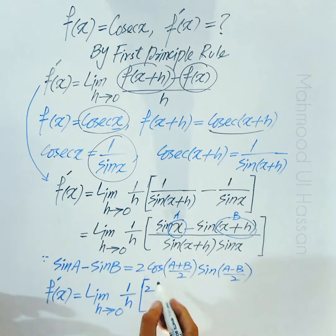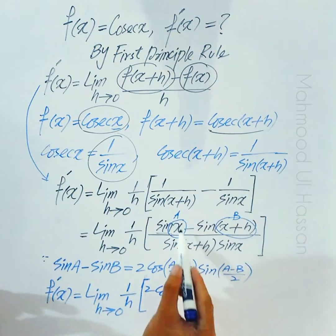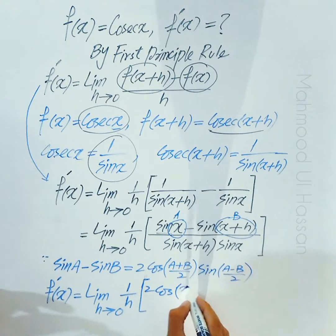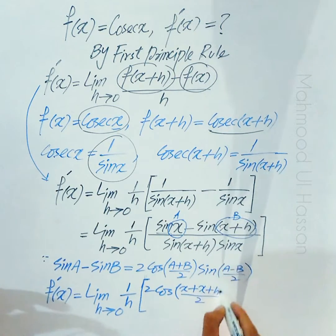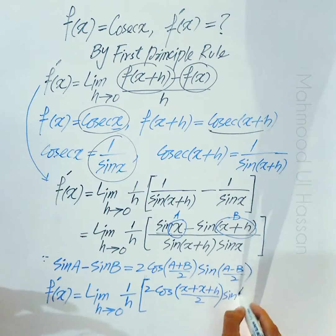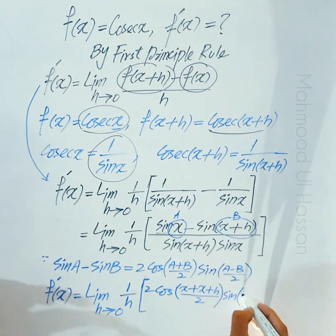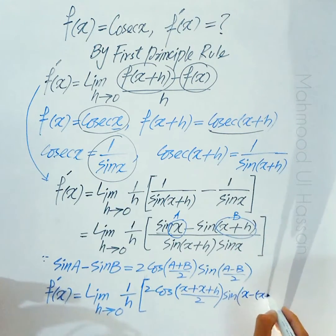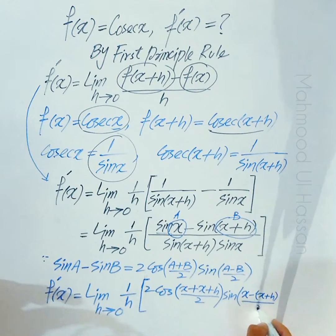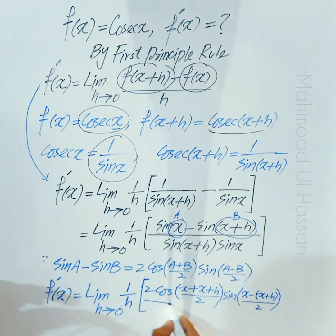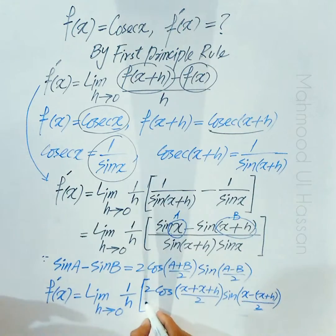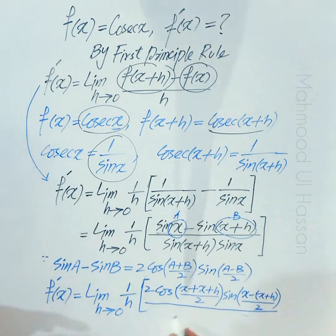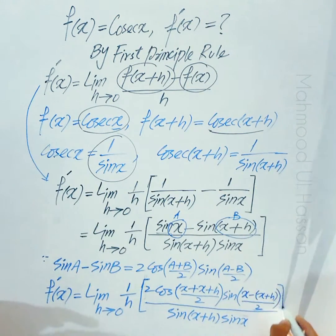Formula apply کرتے ہیں: sin(a) − sin(b) = 2·cos((a+b)/2)·sin((a−b)/2)، جہاں a = x اور b = x+h۔ تو یہ بنے گا: 2·cos((x + x+h)/2)·sin((x − (x+h))/2)، whole divided by sine(x+h)·sine(x)۔